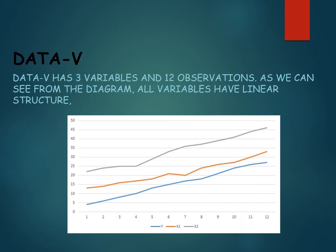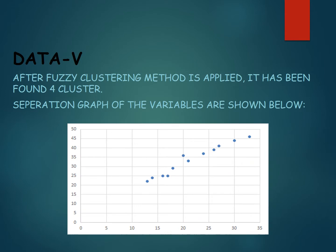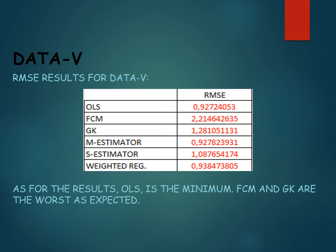Data 5 has three variables and 12 observations. As you can see from the diagram, all variables have a linear structure. After the fuzzy clustering method is applied, four clusters are found. The RMSE results show that ordinary least squares is the minimum, and as expected, FCM and Gustafson-Kessel are the worst.